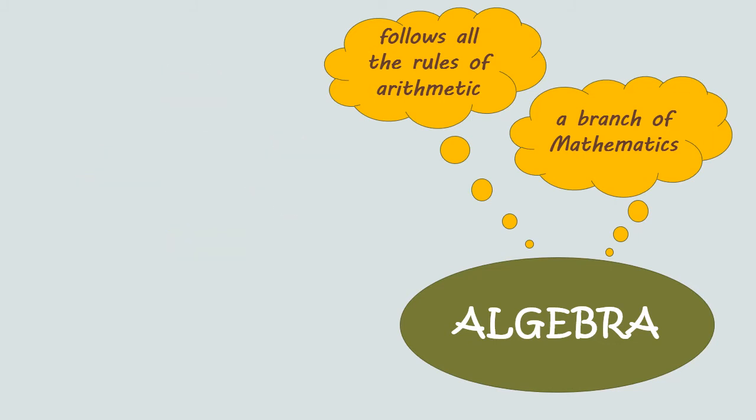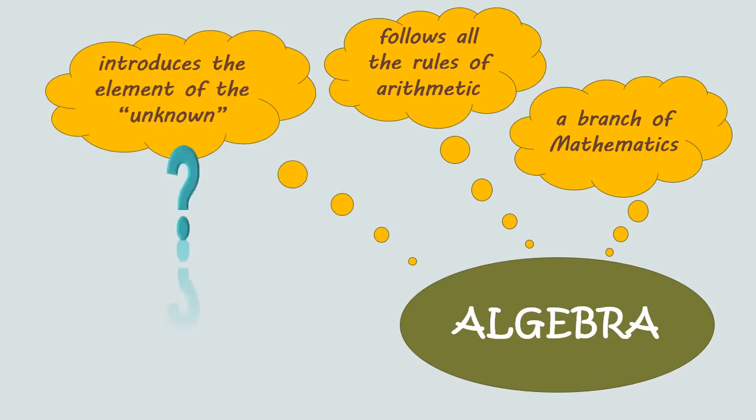In algebra, instead of just carrying out the operations to find the answer to a problem, a symbol is used to represent a number that we do not know yet. This is what we will call the unknown.